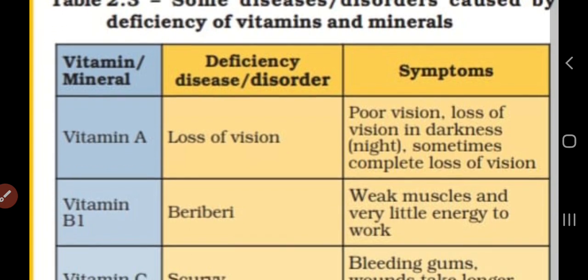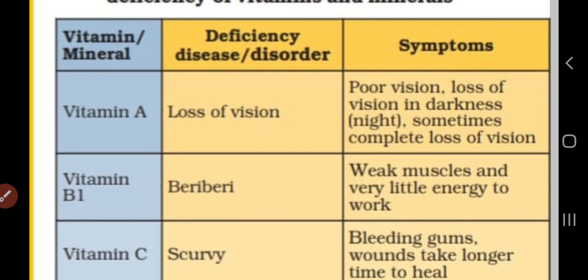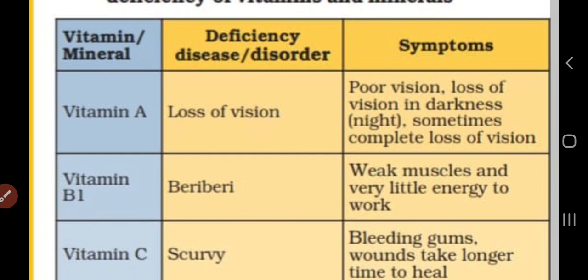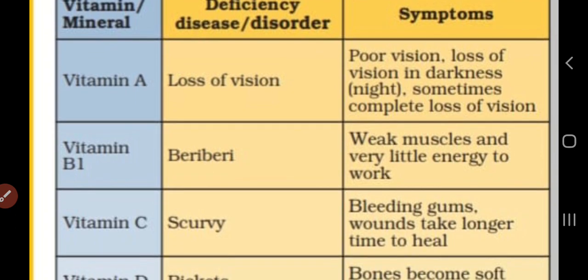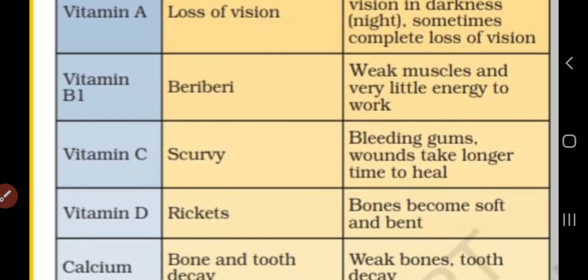Vitamin A deficiency will cause loss of vision — that means poor vision, loss of vision in darkness, and sometimes complete loss of vision. Vitamin B1 will cause beriberi, that means weak muscles and very little energy to work.